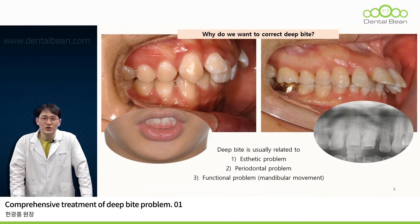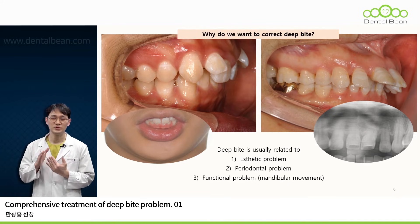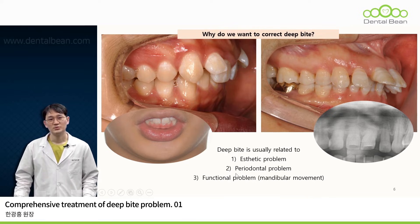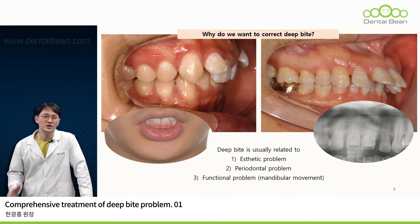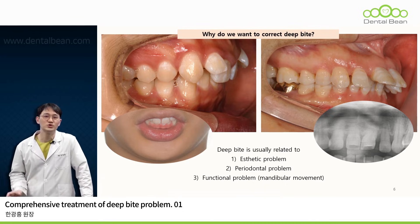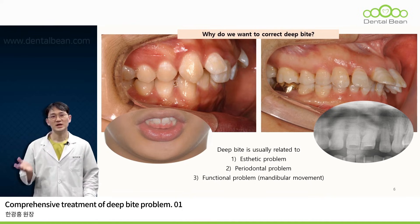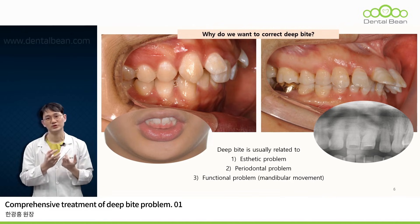So, why exactly must we treat a deep bite? Of course, it's partially because effective orthodontic treatment becomes impossible if the deep bite persists. When explaining the compelling reasons to patients, we can articulate approximately three main justifications. Firstly, due to the excessive coverage of the mandibular incisors by the maxillary incisors, the patient's expression may appear somewhat restricted and artificial when speaking or smiling. Secondly, if this deep bite condition is left untreated for an extended period, the mandibular incisors will strike the lingual gum tissue behind the maxillary incisors, potentially leading to the breakdown of the periodontal tissue there.